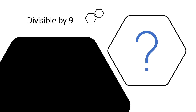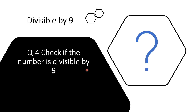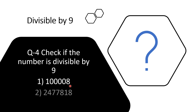Practice makes you perfect. Check if the following numbers are divisible by 9: 1,00,008 and 24,778 — do it in your notebook.